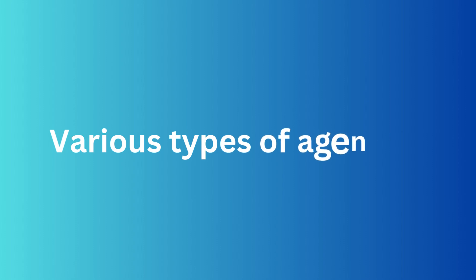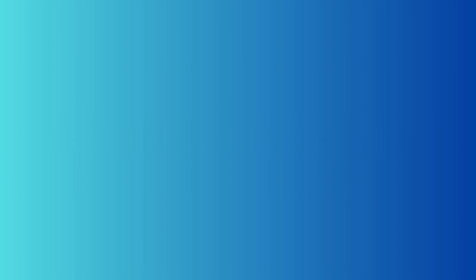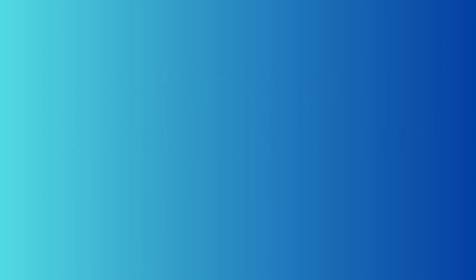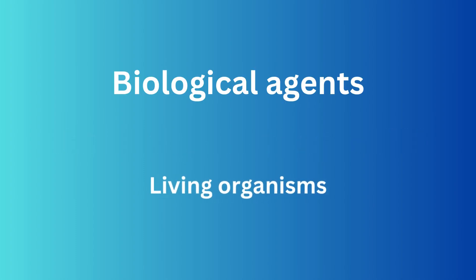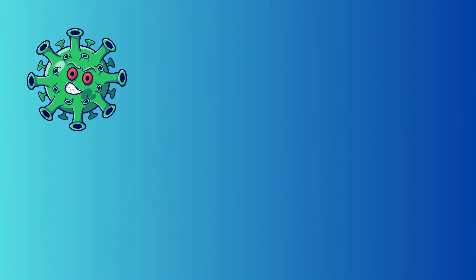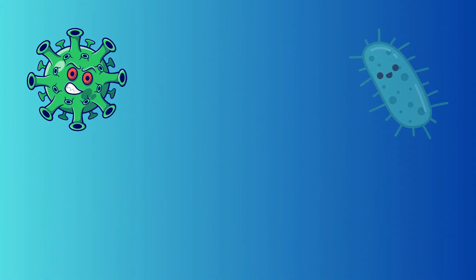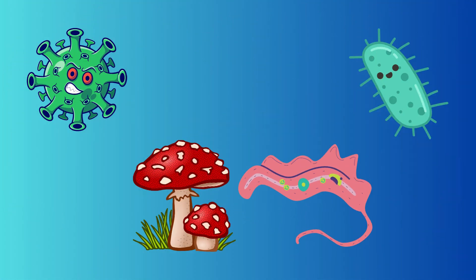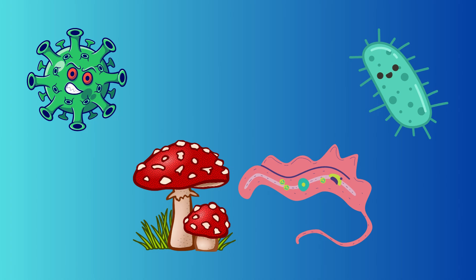Let's break it down into different types of disease agents. First up, we have biological agents. These include living organisms like viruses, bacteria, fungi, protozoa, and metazoa.